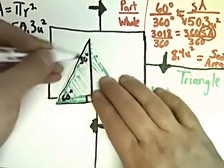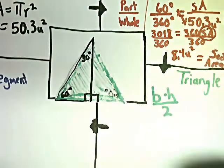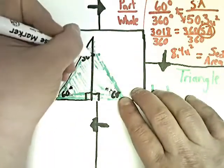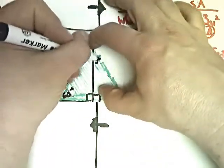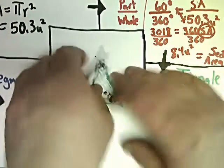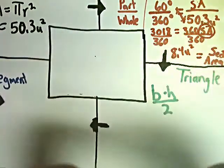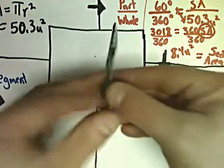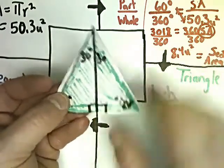So what we have is two 30-60-90 triangles. In fact, I can take it and fold it into two parts. And you can see two 30-60-90 triangles.